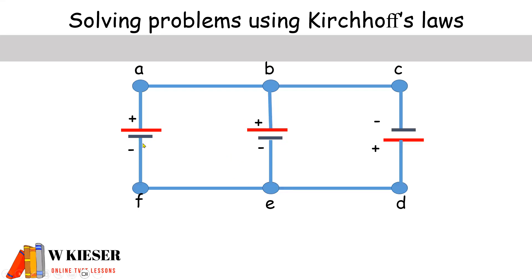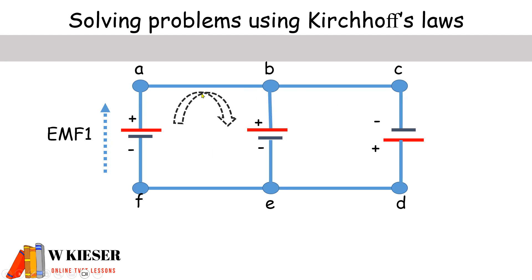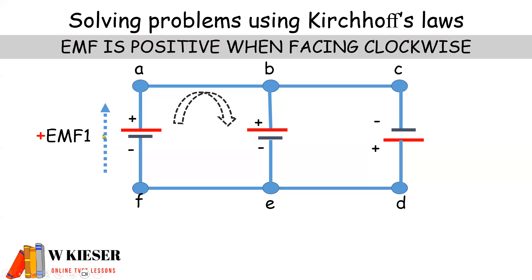If we look at the circuit, you'll see that there are three batteries. We have a positive terminal and a negative terminal. Now the third battery, the terminals are switched around — we have negative at the top and positive at the bottom. For the EMF of the first battery, you will see that it's in the same direction as the conventional current flow, which is from positive to negative. Now when we go about our loops in the circuit, we move in a clockwise direction. Because the EMF is in the same direction as clockwise, it will be positive.